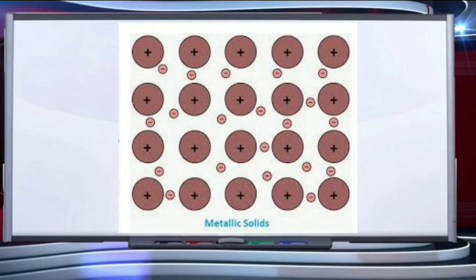The last category of crystalline solids is metallic solids. As seen in the slide, positive ions are surrounded by and held together by a sea of free electrons. These electrons are mobile and are uniformly spread throughout the metallic crystal.